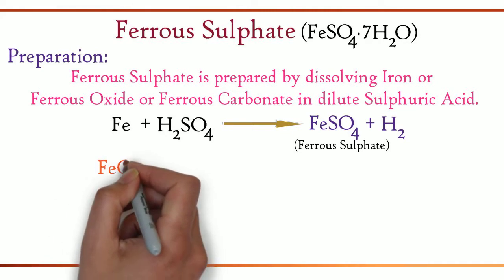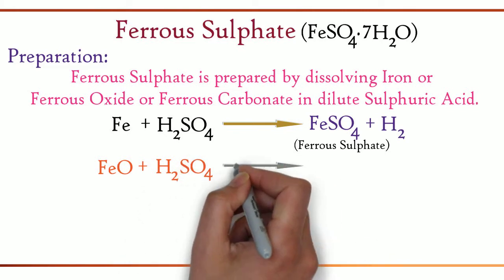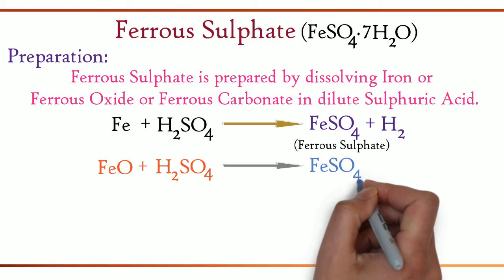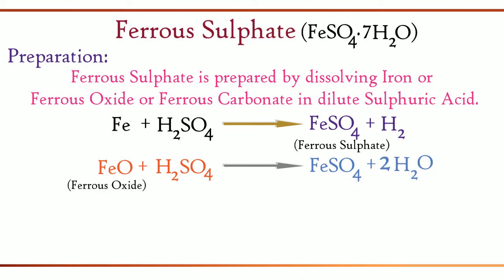Next, FeO + H2SO4 gives FeSO4 + H2O. Ferrous oxide on treatment with sulfuric acid produces ferrous sulfate.